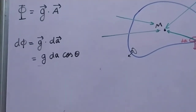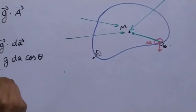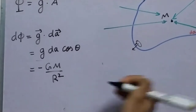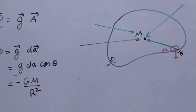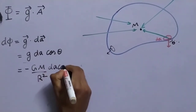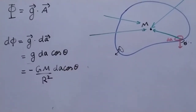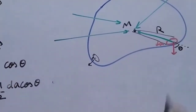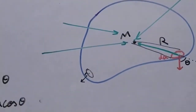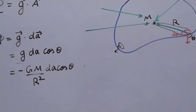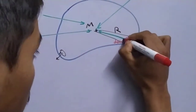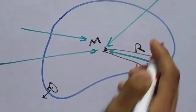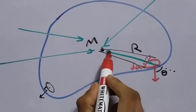What is the gravitational field due to a point mass? It is −GM/R², negative because it points inward. Substituting, dφ equals −GM/R² times dA·cosθ. Here R is the distance from the mass to the area element.